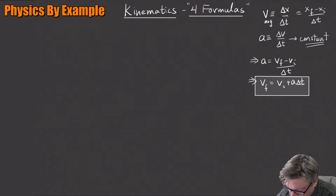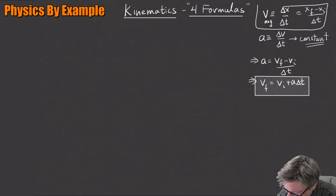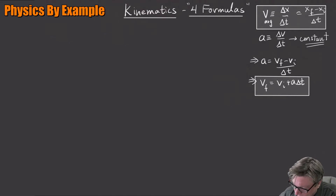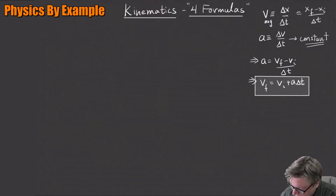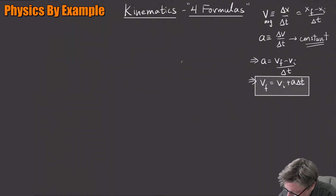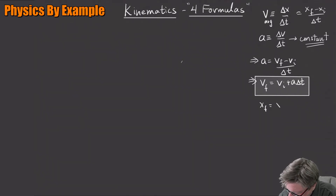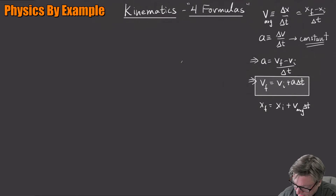Here's another one. Let me write this in a parallel way: x_final equals x_initial plus v_average times delta_t.